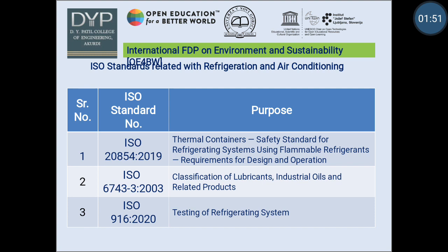In total, there are 29 ISO standards related with refrigeration process. Here I am going to discuss 3 ISO standards. First is ISO 20854-2019, regarding safety standard for refrigerating systems using flammable refrigerant and requirement for design and operation of thermal containers. Second is ISO 6743-3-2003, regarding classification of lubricant, industrial oil and related products for air compressor and refrigerant compressor. Third is ISO 916-2020, related with testing of refrigerating systems.